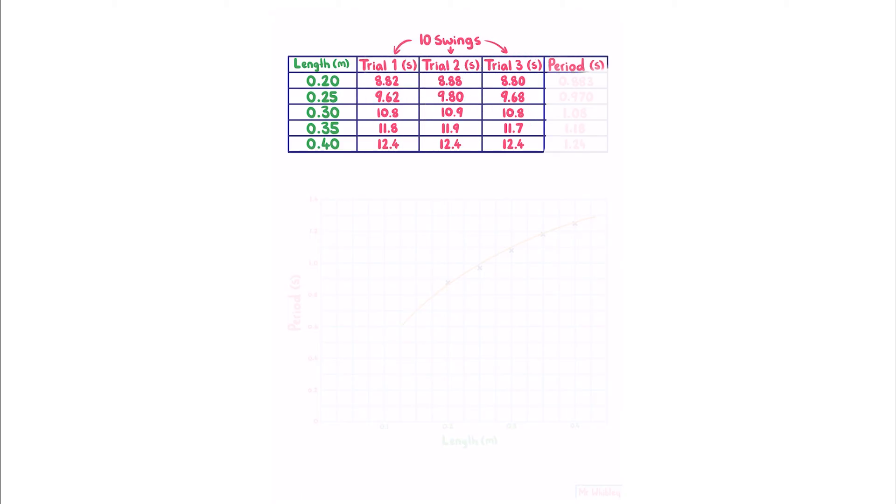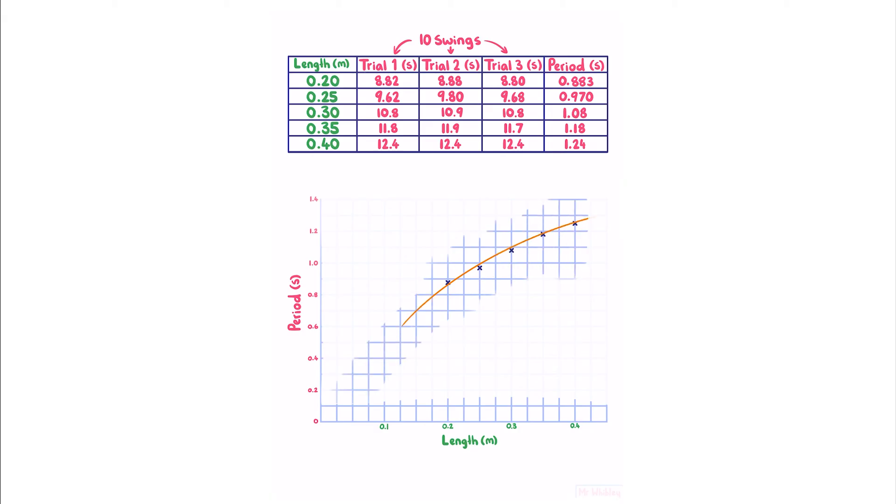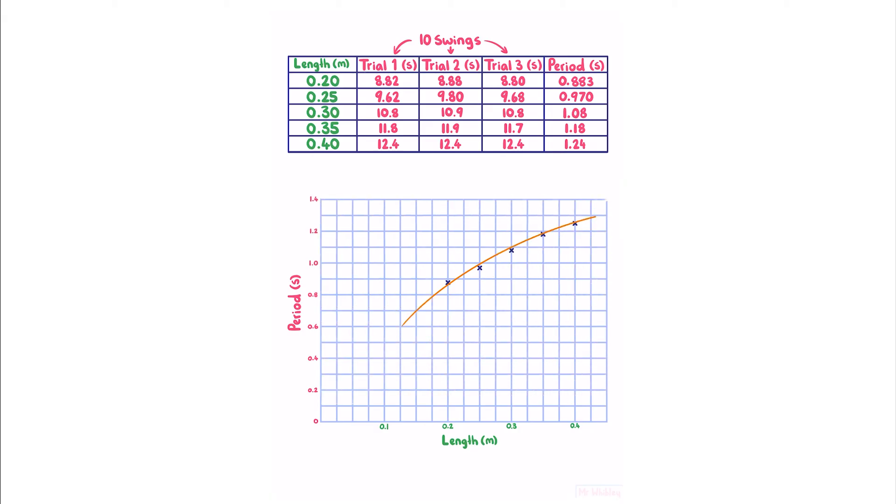Here's my results table with all of the lengths, and my three trials of 10 swings, which I've averaged and divided by 10 to find my single period. Plotting this data on a graph, we have my period on the y-axis, length on the x-axis, with an appropriate scale, my points, and a line of best fit to show the trend. Here I can identify that this shape is a square root.